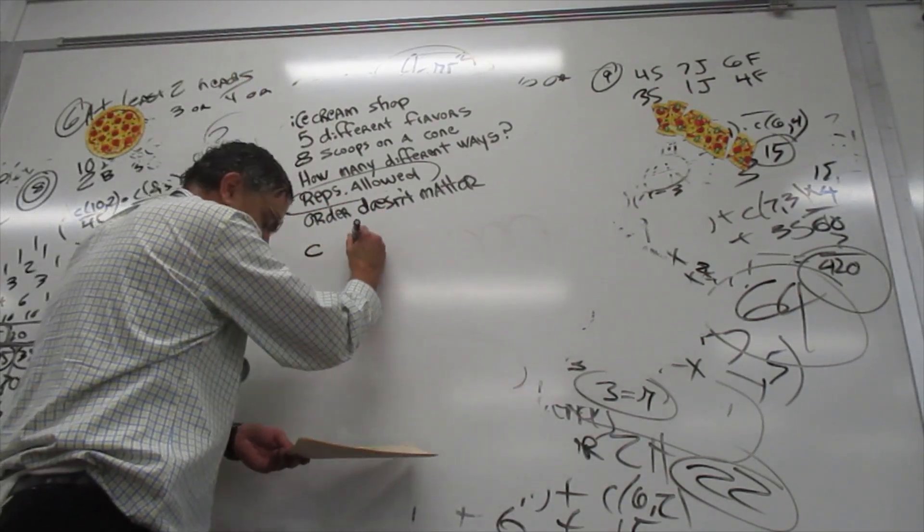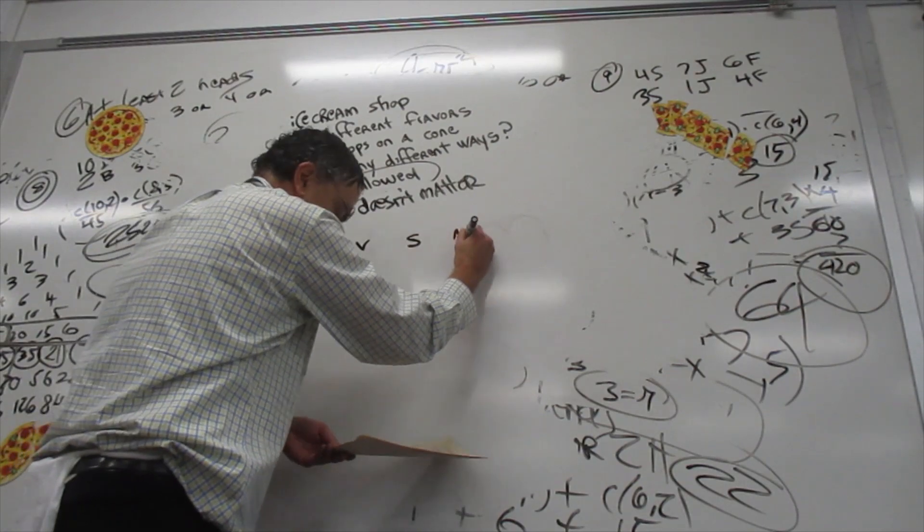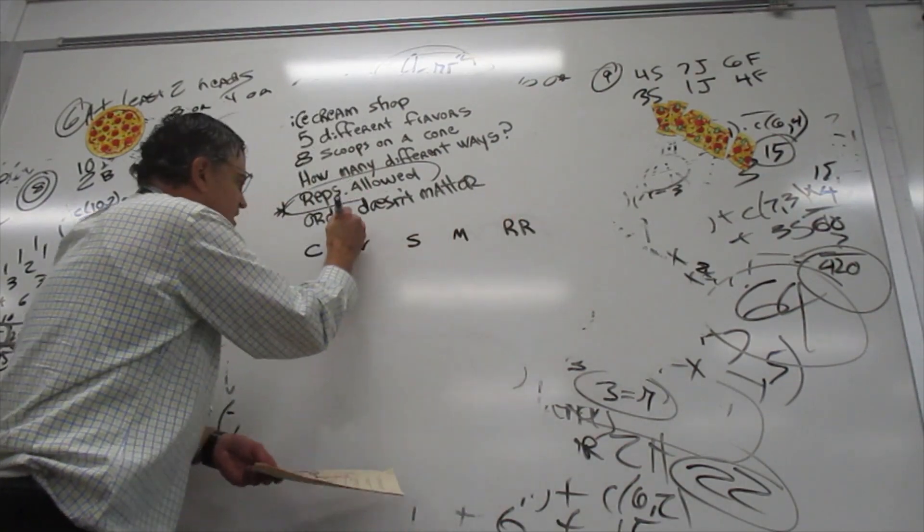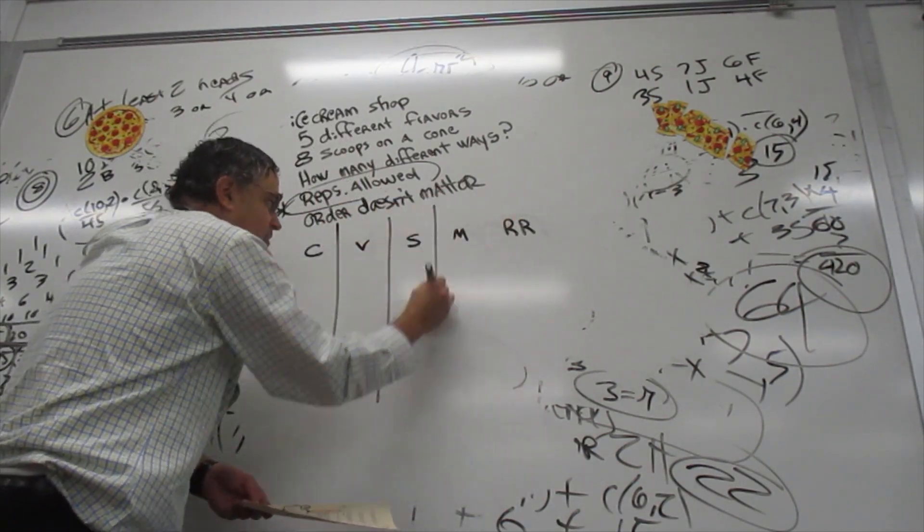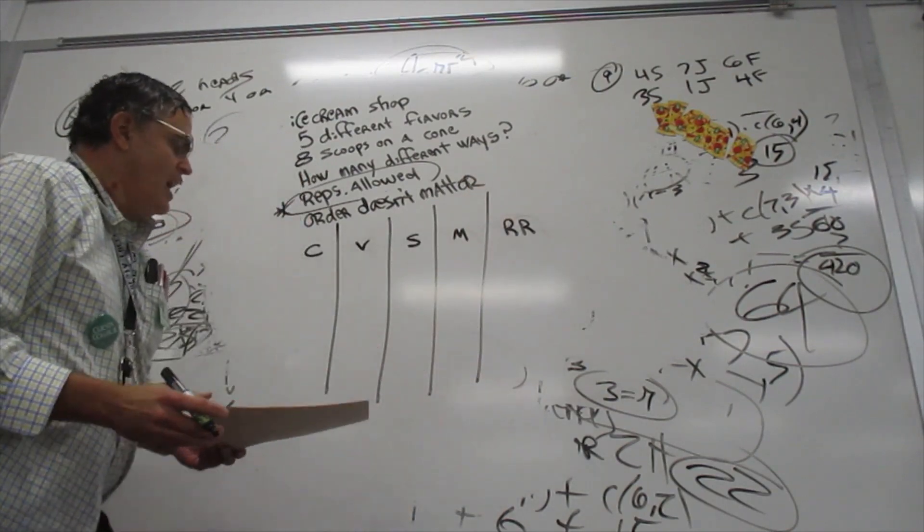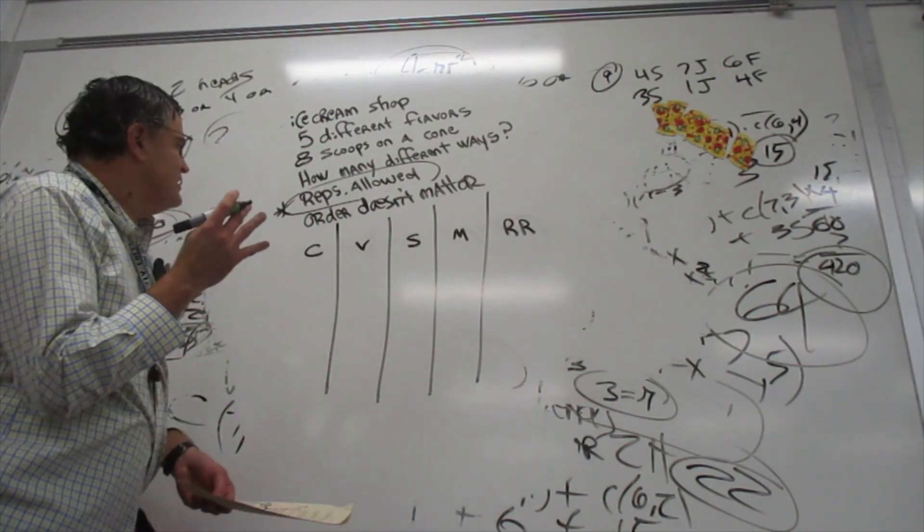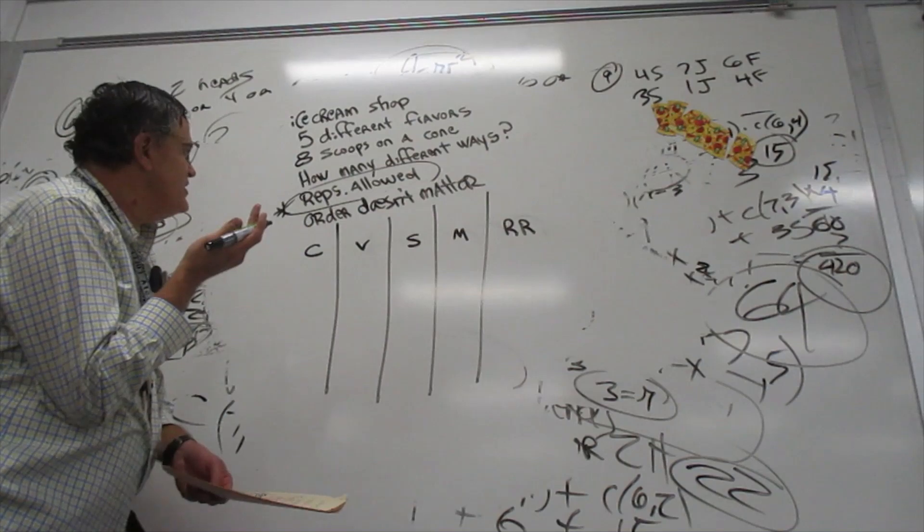Suppose your flavors are chocolate, vanilla, strawberry, mint and chip, and Rocky Road. Go ahead and make this pattern here. And you could say, well, I want three scoops. We'll change this back to three.